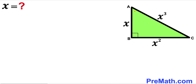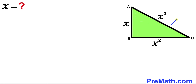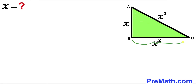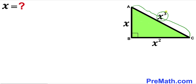Welcome to PreMath. In this video we have a right triangle ABC where leg AB is represented by x, leg BC is represented by x squared, and the hypotenuse AC is x cubed. Our task is to find the value of x — in other words, we are going to solve for x.